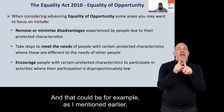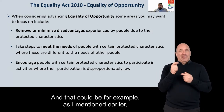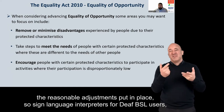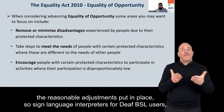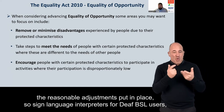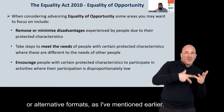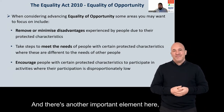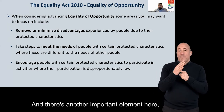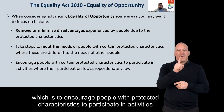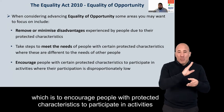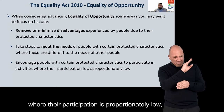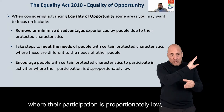For example, this could include the reasonable adjustments mentioned earlier — sign language interpreters for deaf BSL users or alternative formats. There's another important element: encouraging people with protected characteristics to participate in activities where their participation is proportionately low.